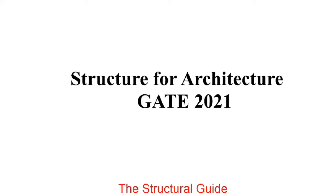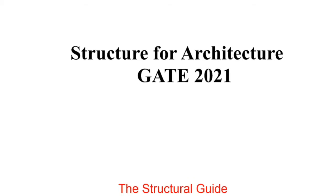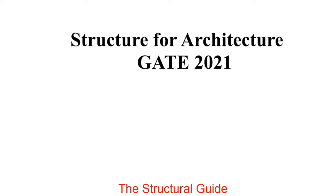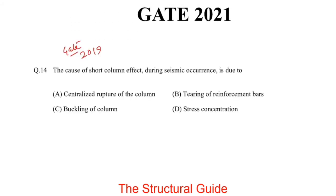Hello and welcome to the Structural Guide platform. Today I will be solving the Gate 2018 question paper. Before moving to the first question from Gate 2018, I would like to discuss one question from Gate 2019 that was missed in the previous lecture. The question is: the cause of short column effect during seismic occurrence is due to?